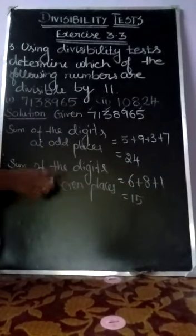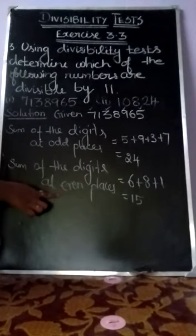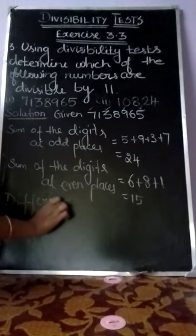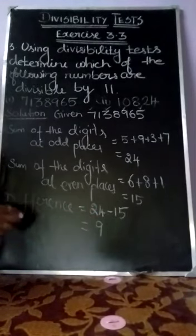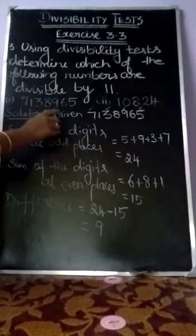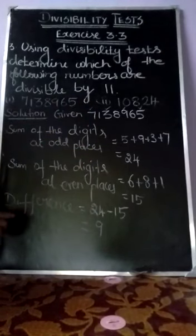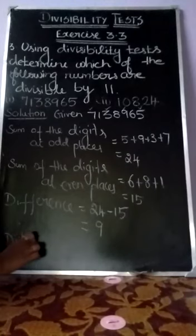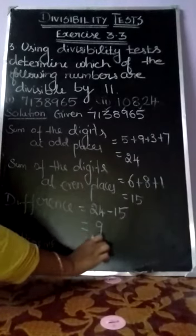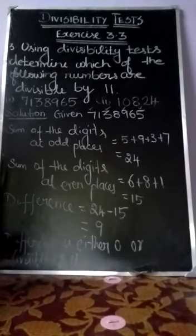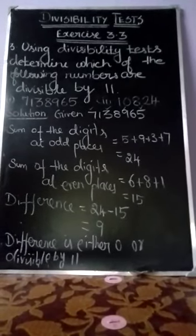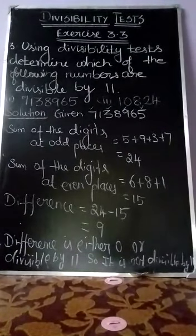Now we find the difference between the sum of digits at odd places and even places: 24 minus 15 equals 9. The difference must be either 0 or divisible by 11 for the divisibility condition. Since 9 is neither 0 nor divisible by 11, the given value is not divisible by 11.